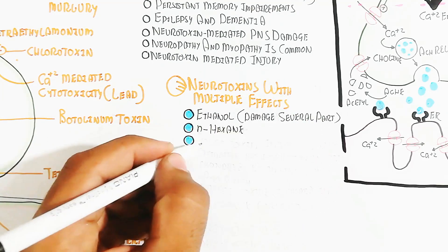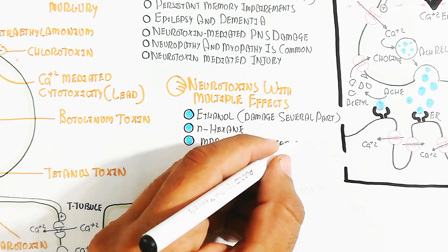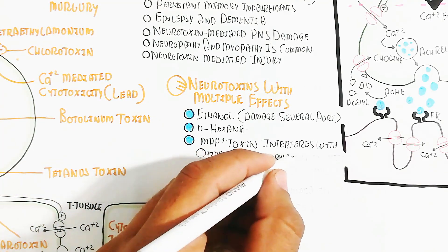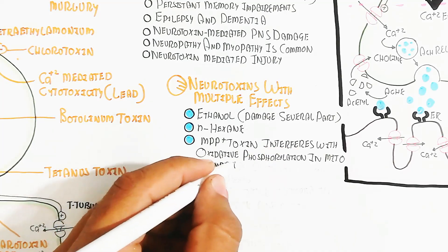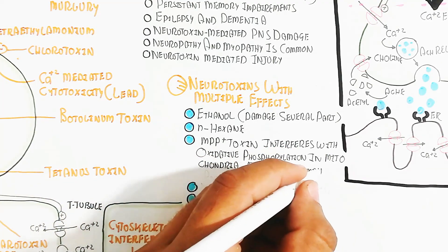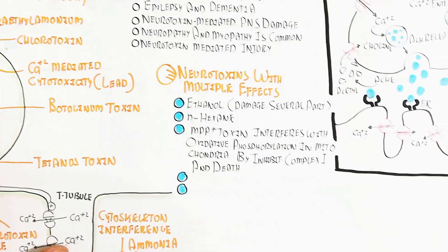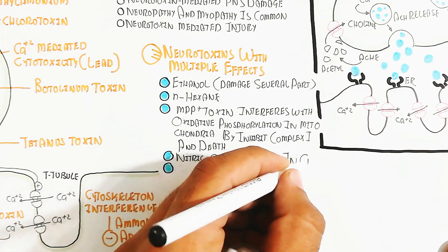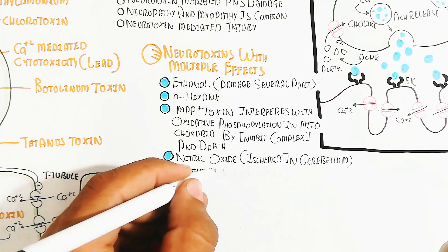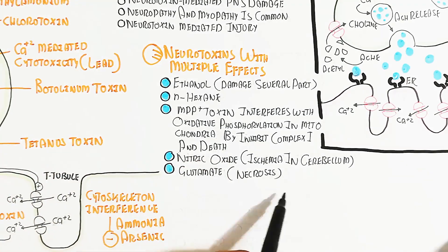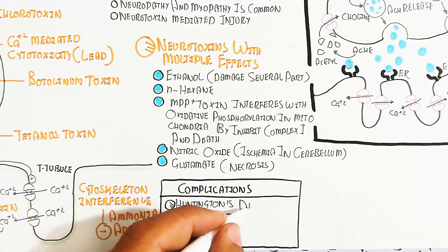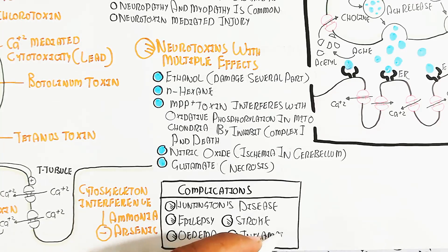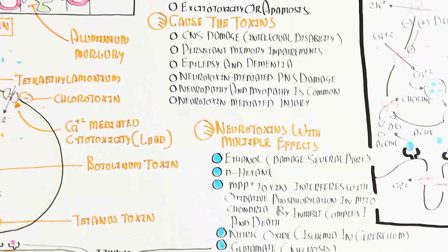Ethanol damages several parts of the brain with excessive chronic consumption. Hexane and MPP+ are toxins that interfere with oxidative phosphorylation in mitochondria by inhibiting complex I, leading to cell death. Excessive nitric oxide causes ischemia in the cerebellum, and excessive glutamate leads to necrosis. Complications from these neurotoxins with multiple effects include Huntington's disease — where the cerebral cortex is damaged — as well as epilepsy, stroke, edema, and inflammation.